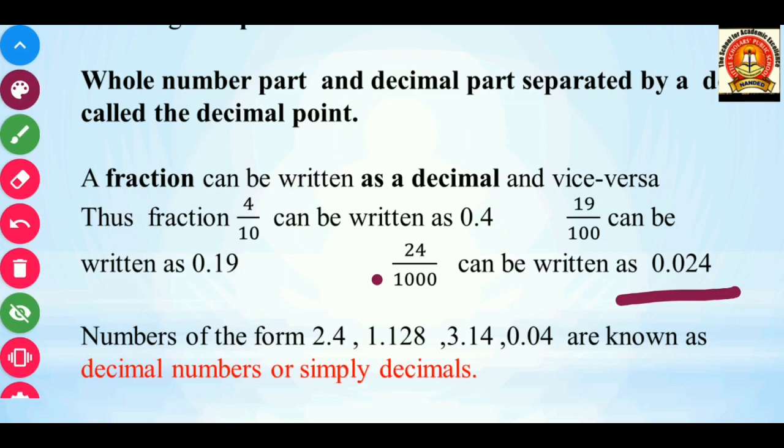Removing the 3 zeros means you need to write the decimal from the right-hand side after 3 digits. So numbers which are in the form of a decimal point — like 2.4, 1.128, 3.14, 0.04 — you can call them decimal numbers, or you can simply call them decimals.